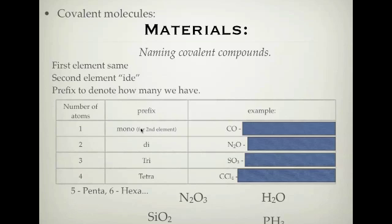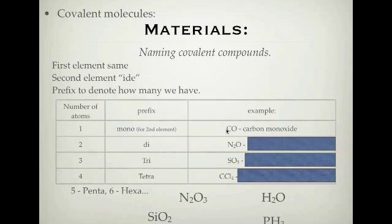The mono prefix only works for the second element — if you have one of the first element you don't use mono. Here's the first example: CO. The first element stays the same, so it's carbon something. The second element ends in '-ide', so it's carbon oxide. We have one carbon and one oxygen. Having one of the first element, we don't worry about it. For the second element we put mono in front, so it's carbon monoxide.